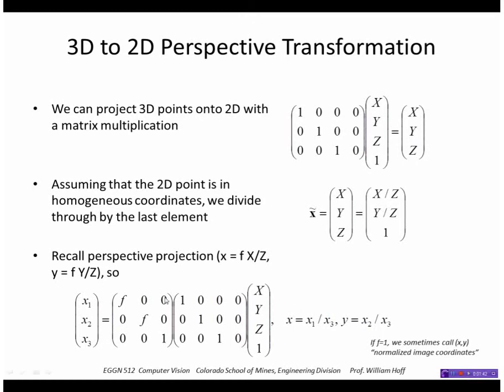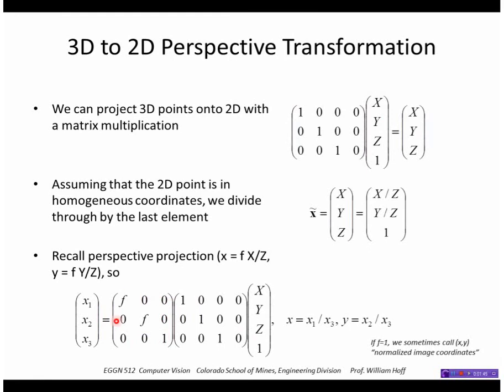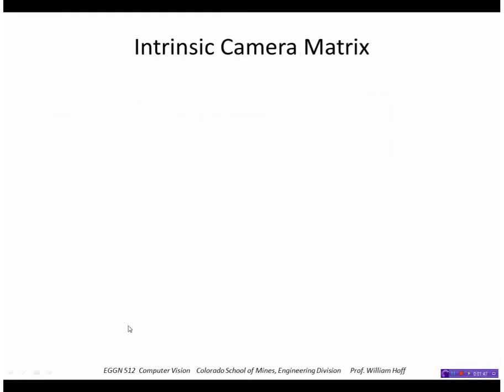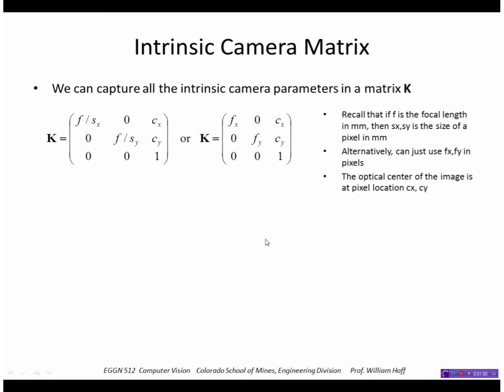This matrix where we put the F, the focal length, we call the intrinsic camera matrix. And what we're going to do is we're going to put all the intrinsic camera parameters into that matrix. So F - we could use F, if we don't have square pixels then we have a different focal length in X and Y, which we put in these elements. And this is the center of the image at pixel location CX, CY. So we put all that in matrix K.